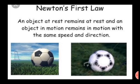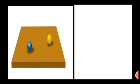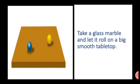Newton's First Law can be demonstrated by rolling a ball on the floor and observing its constant velocity once released. An object will move in a straight line at a constant speed unless or until another force acts upon it, causing a change in speed or direction. Take a glass marble and let it roll on a smooth tabletop — after some time its velocity will decrease and it will stop.